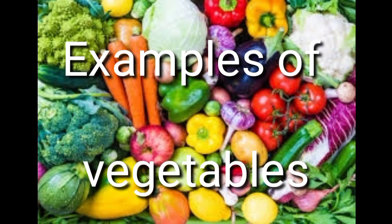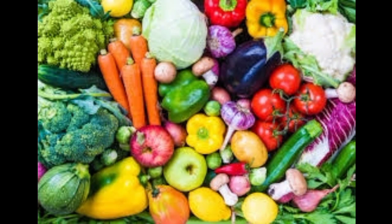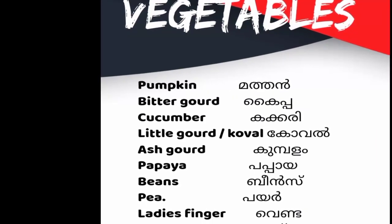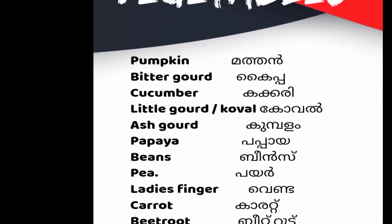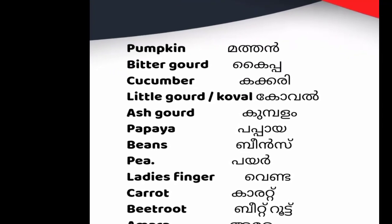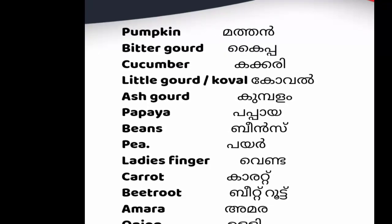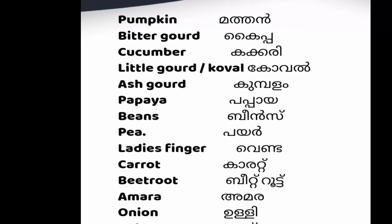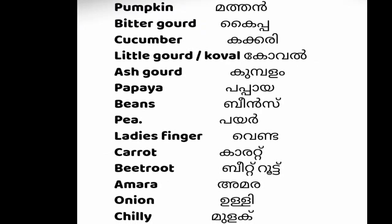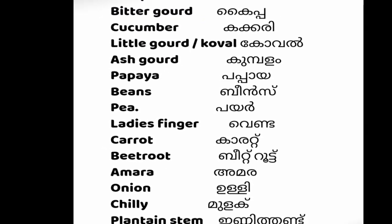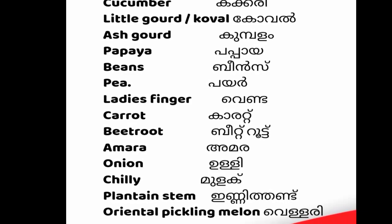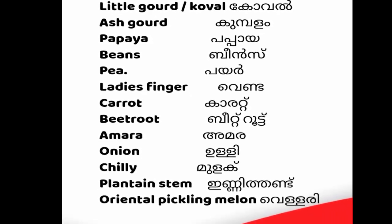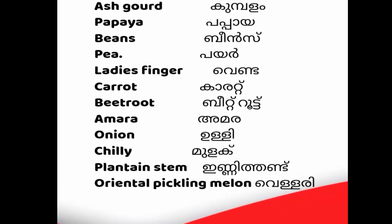Examples of vegetables: Pumpkin, Bitter gourd, Cucumber, Little gourd, Ash gourd, Papaya, Beans, Pea, Lady's finger (Vendakka), Carrot, Beetroot, Onion, Chili, Plantain stem, and Oriental Pickling Melon (Vellarikka).